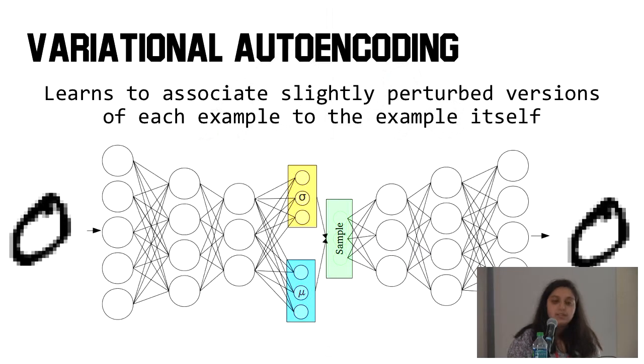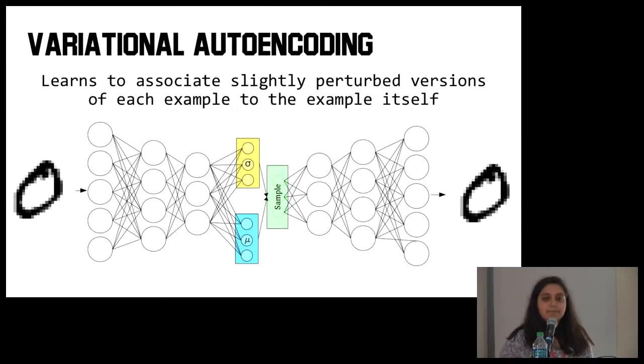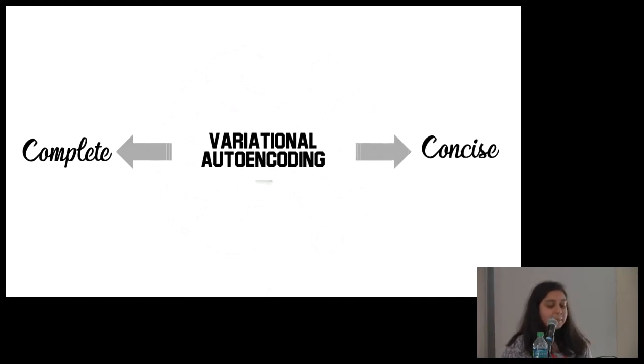So instead, we can use something called variational autoencoding. Variational autoencoding follows the same general structure, but what it does is it learns to associate slightly perturbed versions of each example to the example itself. You can see here you have the sigma and the mu values, which are variance and mean. You calculate those two and you use them to choose how much you want to perturb the data. You need to perturb it enough or basically change it enough that your computer can't memorize it, but not too much that you're straying too far away from the original data set. This forces the model to come up with a code that's continuous, so you can apply it to other examples, so you're not just memorizing the data. Therefore, variational autoencoding is complete, it's concise, but it's also continuous.